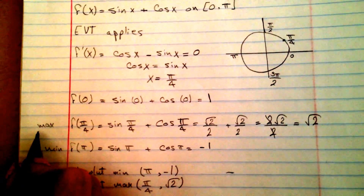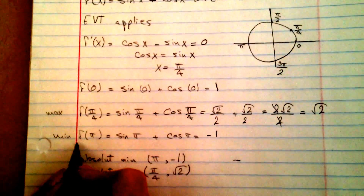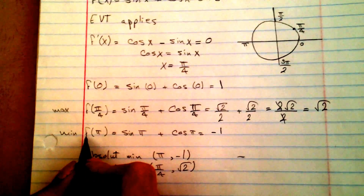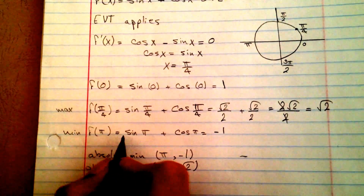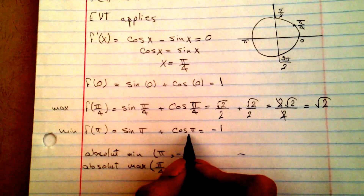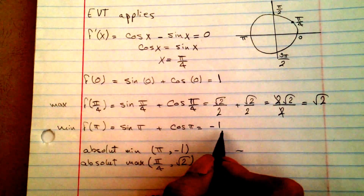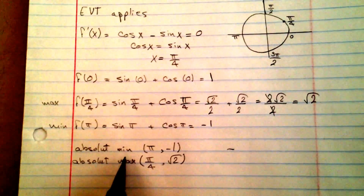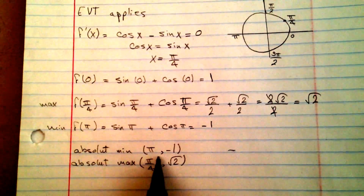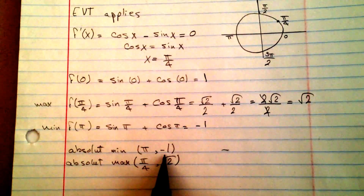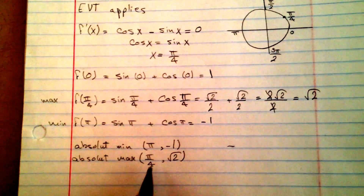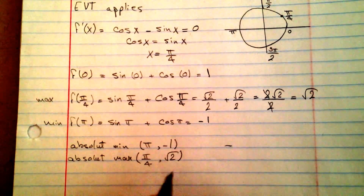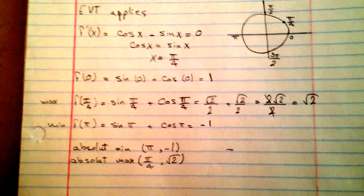Square root of 2 is our maximum. For the minimum, f of pi equals sine of pi plus cosine of pi equals negative 1. So the absolute minimum is at x equals pi with a value of negative 1, and the absolute maximum is at x equals pi over 4 with a value of square root of 2.